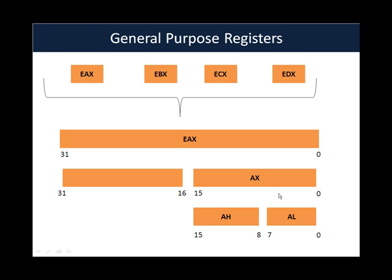Similarly, for EBX you can access the first 16 bits by referencing it as BX, with BH and BL for the high and low bytes. You just need to remember that among the general purpose registers, these four registers — EAX, EBX, ECX, EDX — allow selective access to their lower-order bits using different names: AX, AH, AL; BX, BH, BL; CX, CH, CL; and DX, DH, DL.